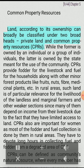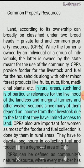Common Property Resources (CPRs). Land, according to its ownership, can broadly be classified under two heads: private land and common property resources (CPRs). While the former is owned by an individual or a group of individuals, the latter is owned by the state meant for the use of the community. CPRs provide fodder for the livestock and fuel for the households, along with other minor forest products like fruits, nuts, fiber, medicinal plants, etc. In rural areas, such land is of particular relevance for the livelihood of the landless and marginal farmers and other weaker sections, since many of them depend on income from their livestock due to limited access to land. CPRs are also important for women as most of the fodder and fuel collection is done by them in rural areas.